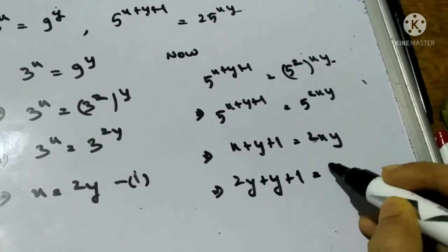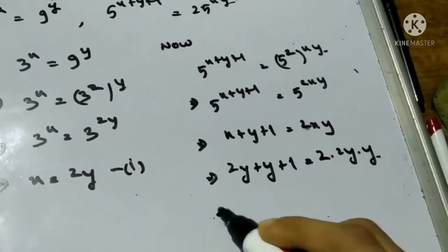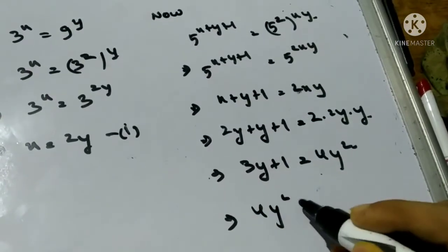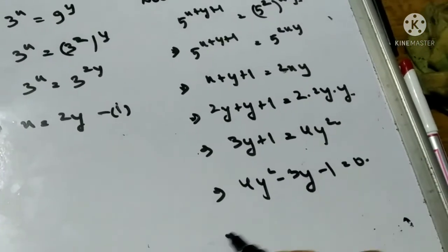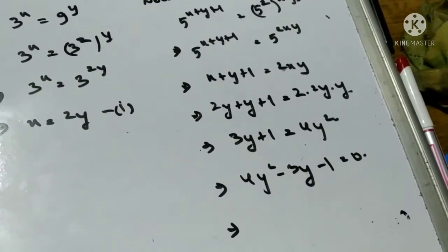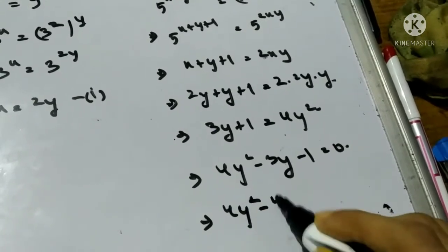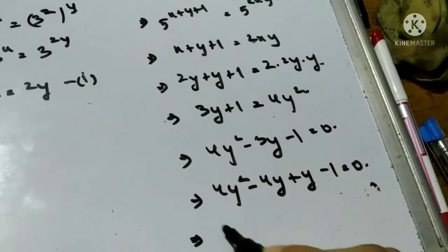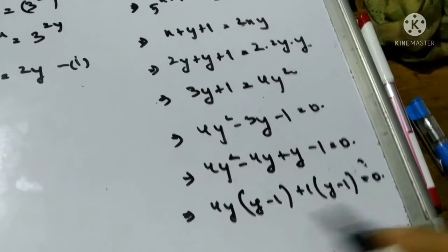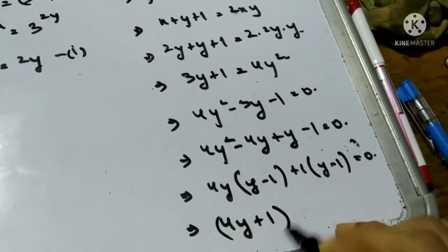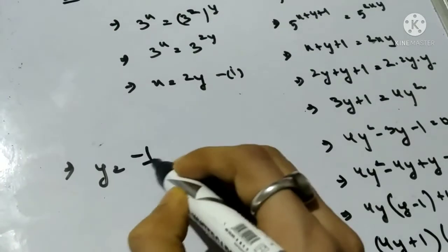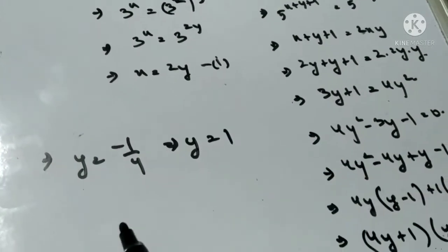Substituting x equals 2y: 2y plus y plus 1 equals 2(2y)(y), giving 3y plus 1 equals 4y². Rearranging: 4y² minus 3y minus 1 equals 0. Splitting: 4y² minus 4y plus y minus 1 equals 0, so 4y(y minus 1) plus 1(y minus 1) equals 0, giving (4y plus 1)(y minus 1) equals 0. Therefore y equals minus 1/4 or y equals 1.